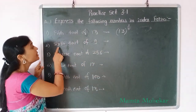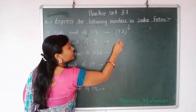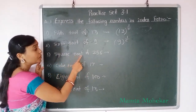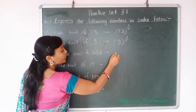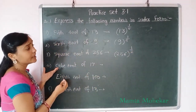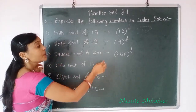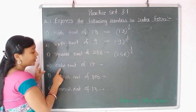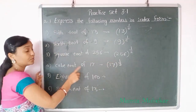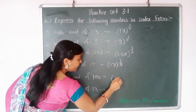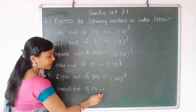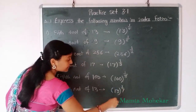Third example: square root of 256. Square means 2, so we write 256 to the power 1 upon 2. The question is index form, so it is necessary to write 1 upon 2. Fourth example: cube root of 17. Cube means 3, so 17 to the power 1 upon 3. Fifth example: 8th root of 100, so 100 to the power 1 upon 8. Sixth example: 7th root of 13, so 13 to the power 1 upon 7.